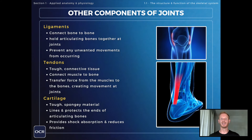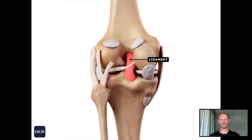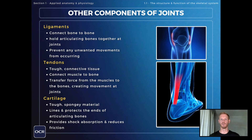Ligaments are tough pieces of connective tissue that connect bones to bones. Their role is to hold articulating bones together at joints, like the femur and the tibia being held together by the anterior cruciate ligament here at the knee, and this serves to prevent any unwanted movements from occurring. So they restrict movements and they keep the bones together at joints.